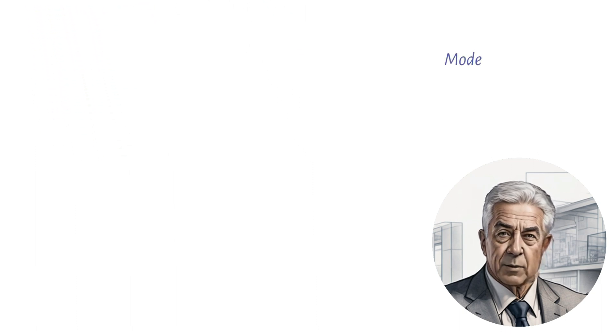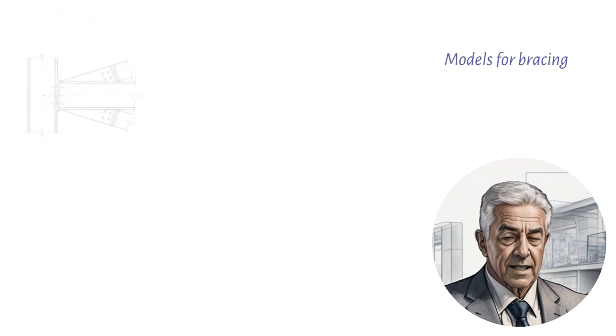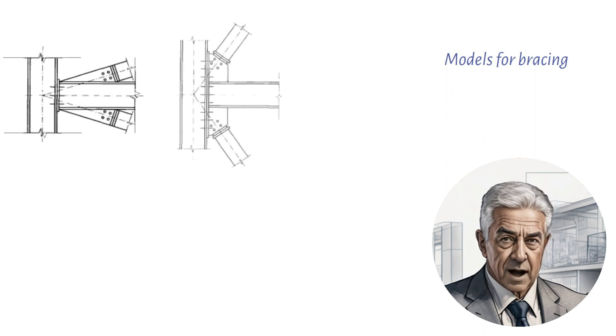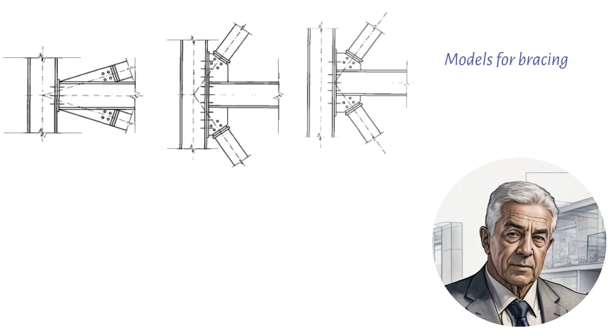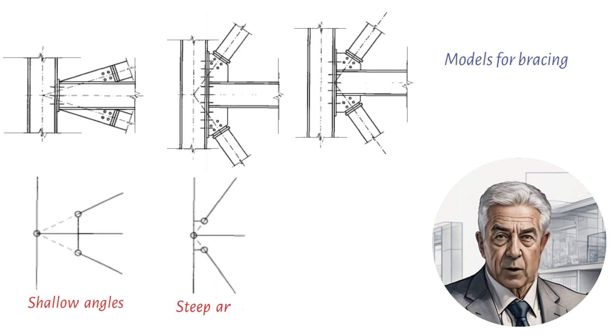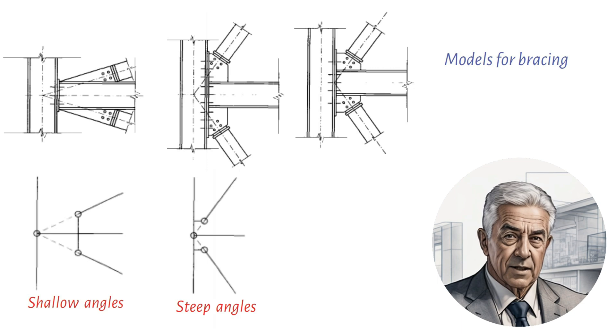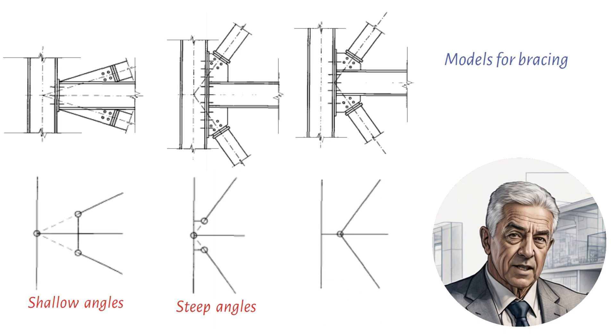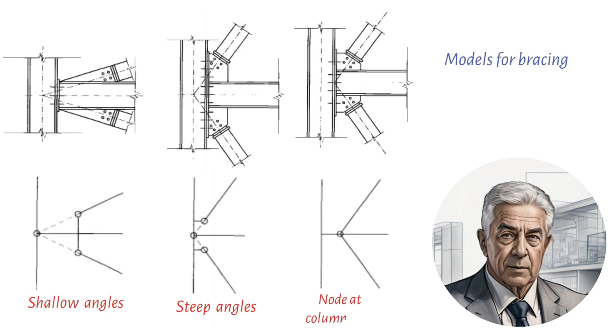Finally, we will address some common issues with bracing systems and discuss more appropriate models for analysis. Specifically, when the bracing angle is shallow or steep, more appropriate models for analysis are needed. As such, it is recommended to use stocky members with high inertia for the stubs from the main members to the bracing. Moreover, the bracing connections to the stubs should be modeled as pins, with rigid connections between the stubs and the mainframe elements.